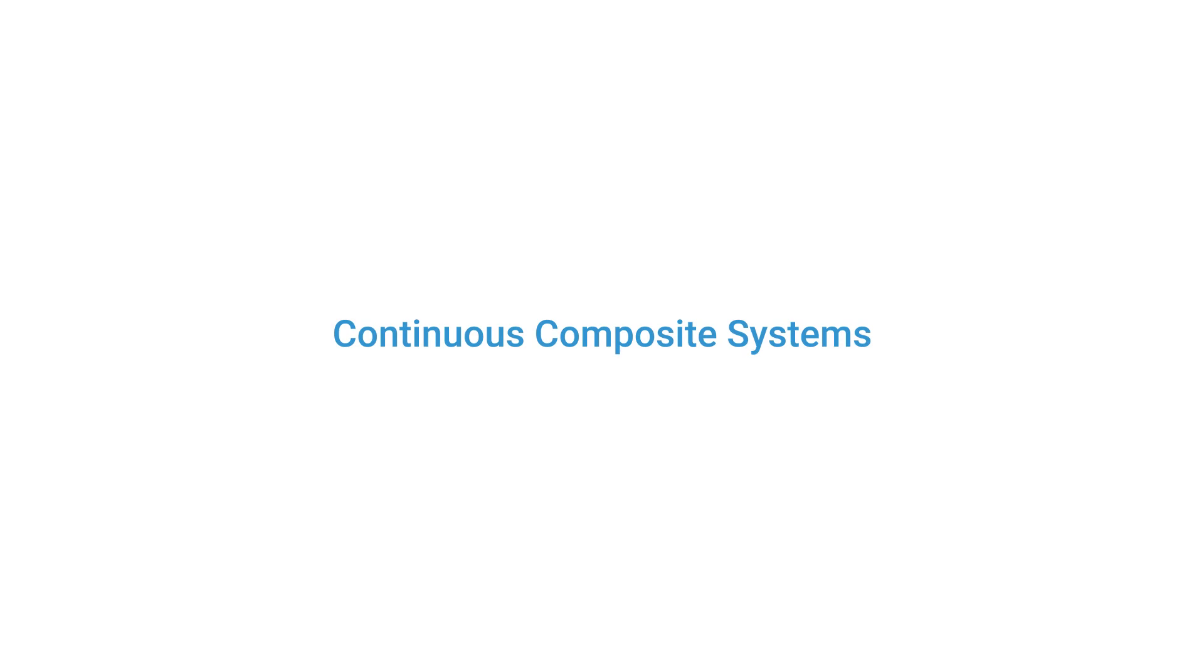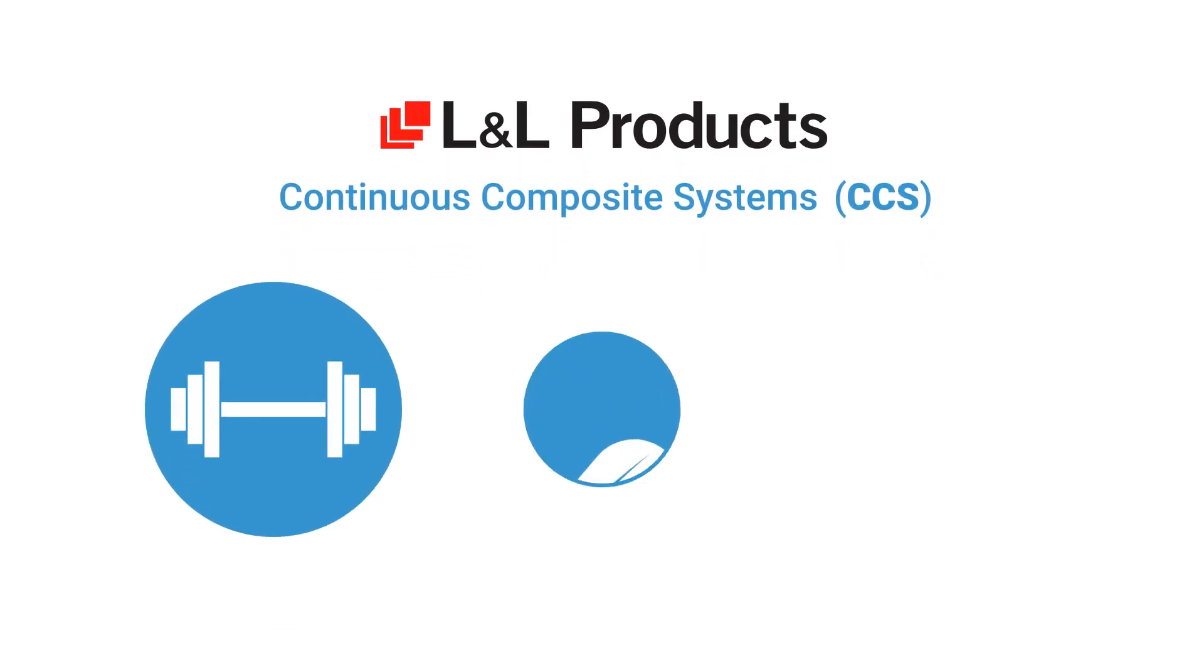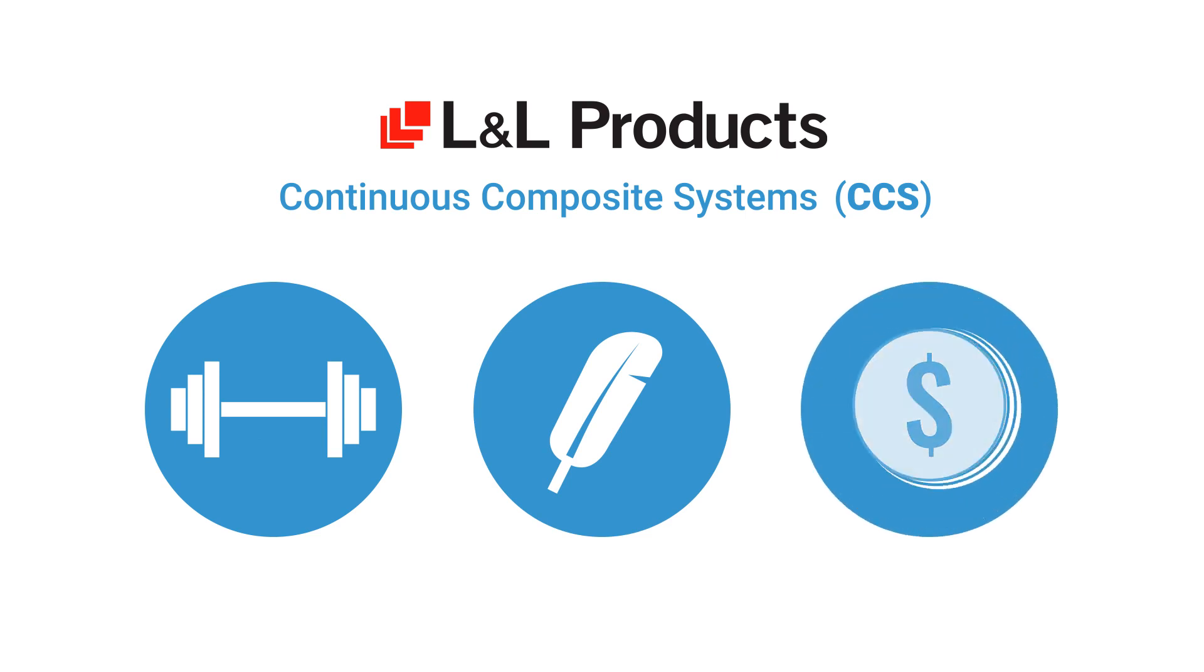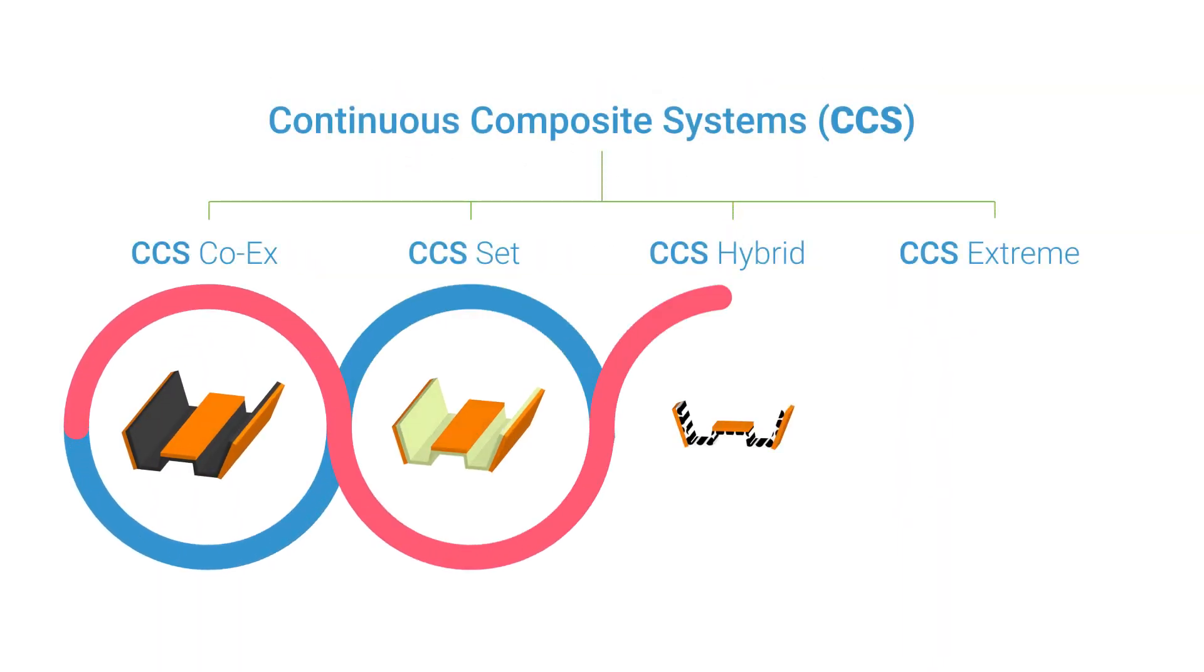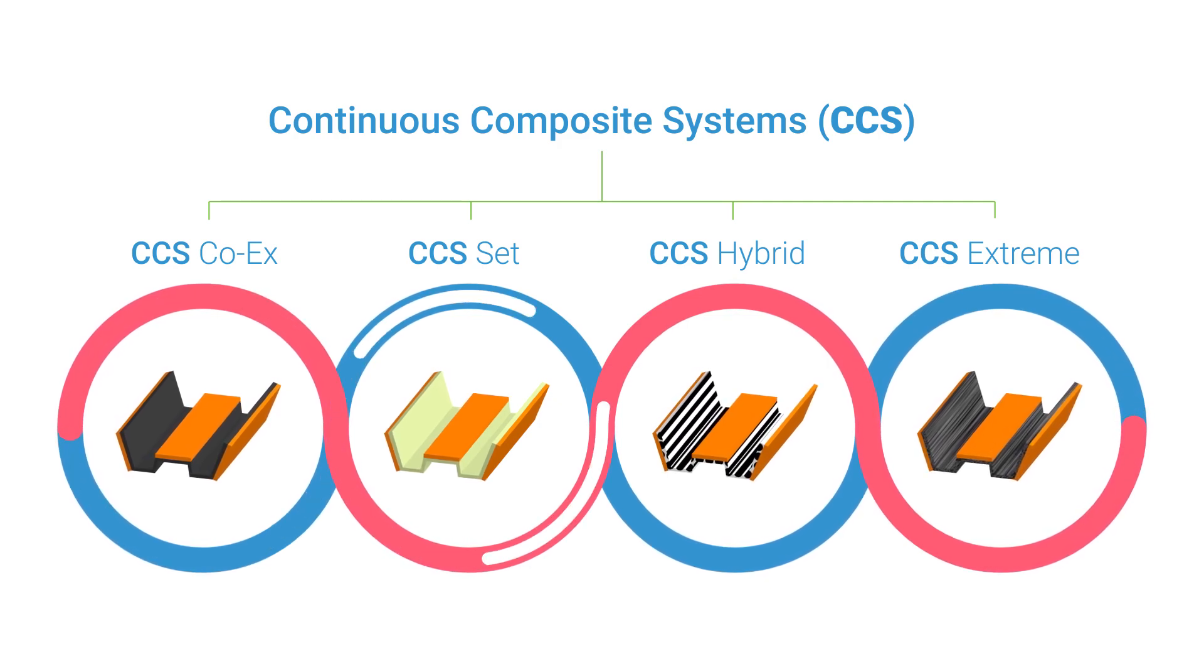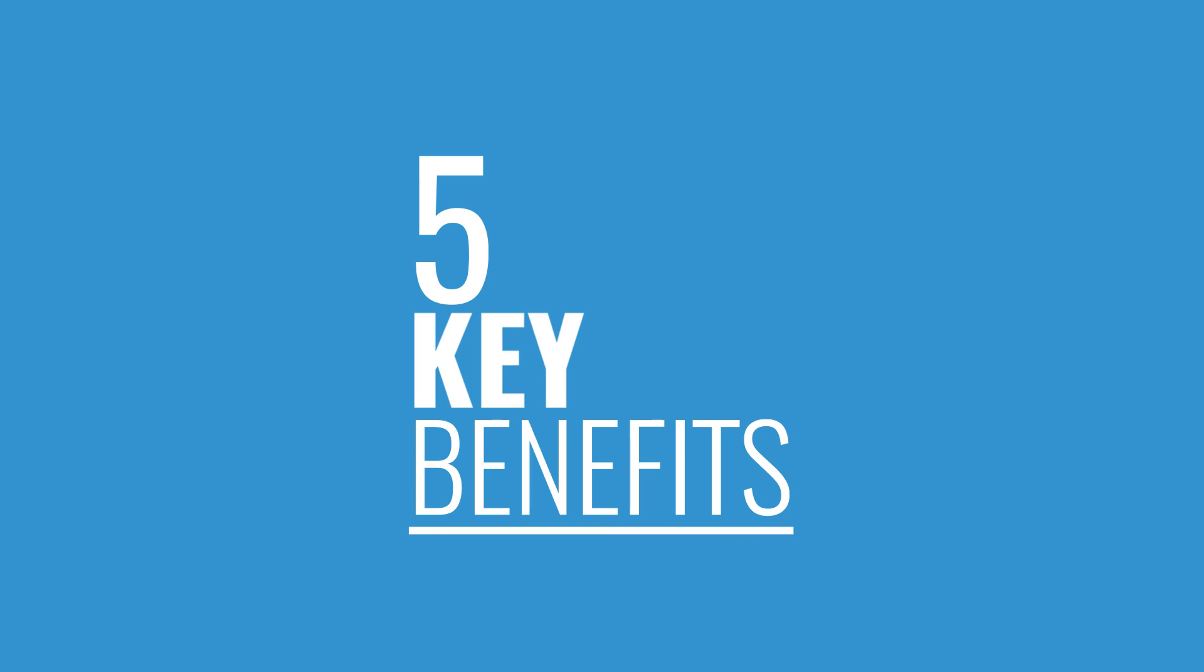Through continuous composite systems or CCS from L&L products, you can achieve ultra strong and lightweight body structures at a cost competitive rate. Continuous composite systems brings to market continuous section parts using an advanced manufacturing process and delivers five key benefits over traditional solutions.